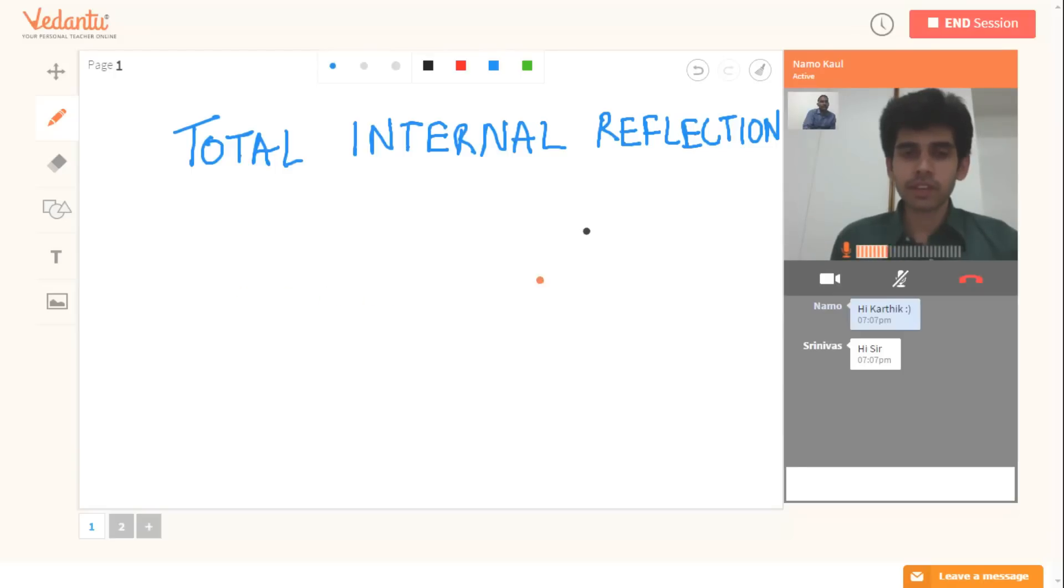So let me draw an interface. Now this is an interface of two mediums, one is a denser medium and one is rarer. Can you give me an example of a combination of denser and rarer mediums? Water and air. Okay, so water is denser. So I write this is water and this rarer medium is air, and this is the interface between the two.